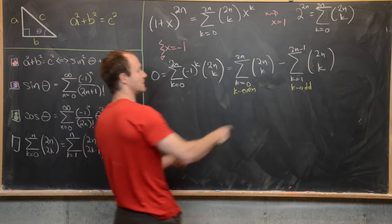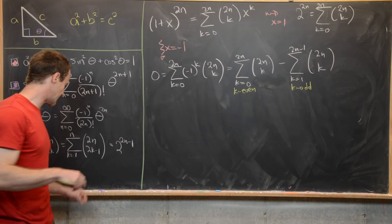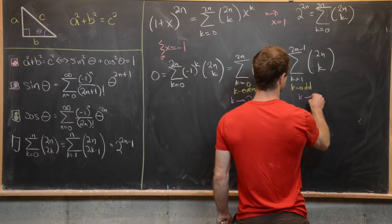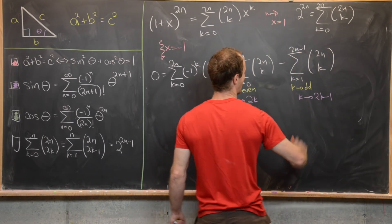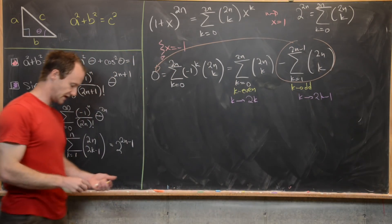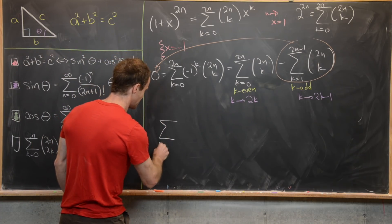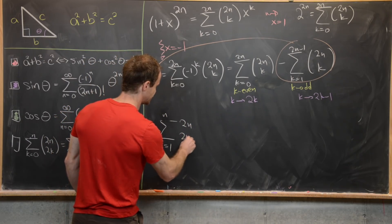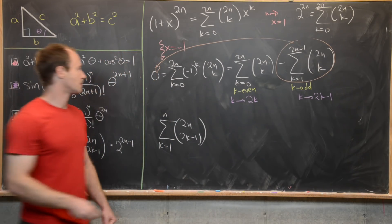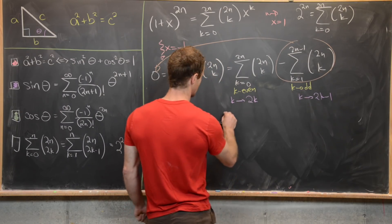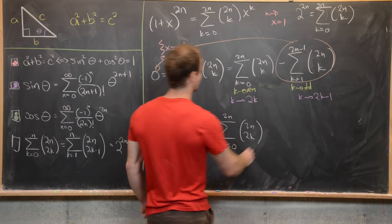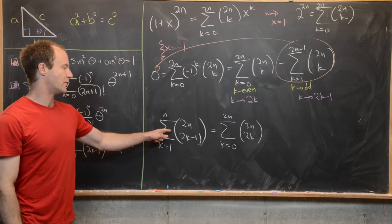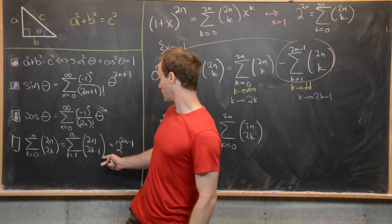Now re-index: send k to two k for the even sum and k to two k minus one for the odd sum, and move the odd sum to the left-hand side. That gives the sum as k goes from one to n of two n choose two k minus one equals the sum as k goes from zero to n of two n choose two k. Since their difference was zero, these two sums are exactly equal.